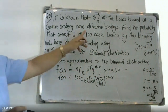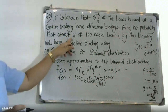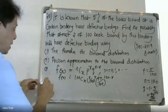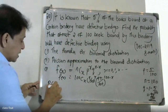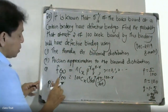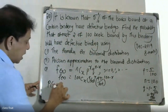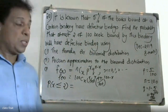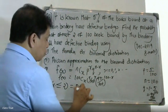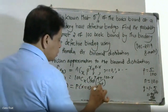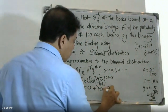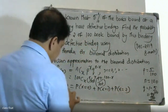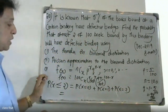We need to find the probability that at most two books are defective. So we need P(X ≤ 2), which equals the probability of x equal to zero, plus probability of x equal to one, plus probability of x equal to two, using the distribution function.